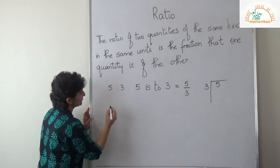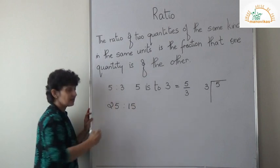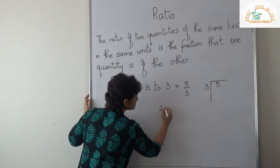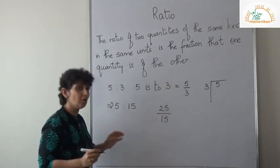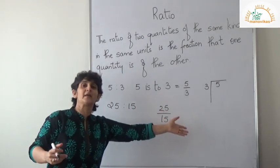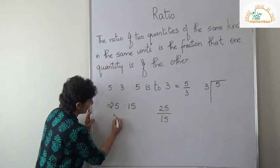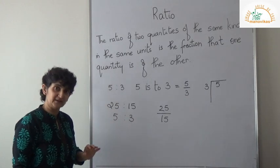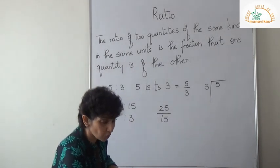Suppose I have 25 is to 15. Now remember, since this also means 25 upon 15, you have to reduce it to simplest form. The table of 5 goes here: 5 fives are 25, 5 threes are 15. So I'm sure you have understood what a ratio is.